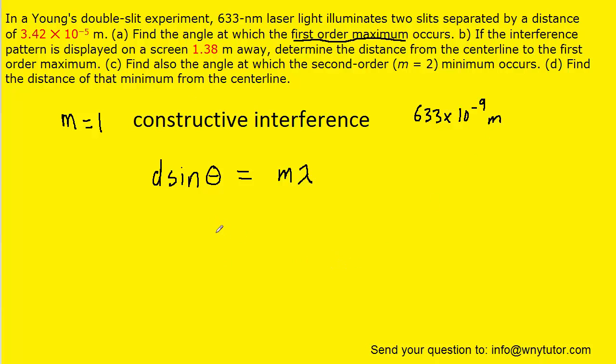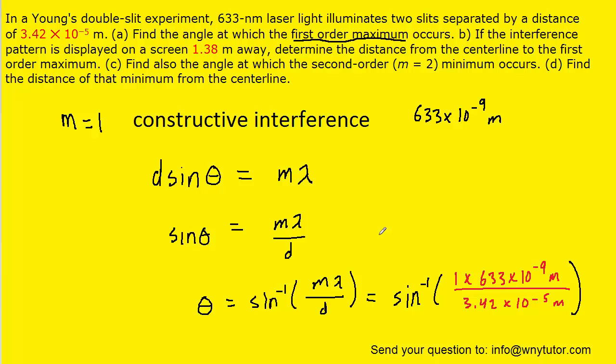Since we're looking for the angle, we can solve this equation for theta. We begin by dividing both sides by D, then take the inverse sine of both sides. So the angle is the inverse sine of mλ/D. D is the distance between the slits given in the standard unit, so we can go ahead and plug in the three known values. When you process that in degree mode, you should get roughly 1.06 degrees. This is the correct answer to part A.